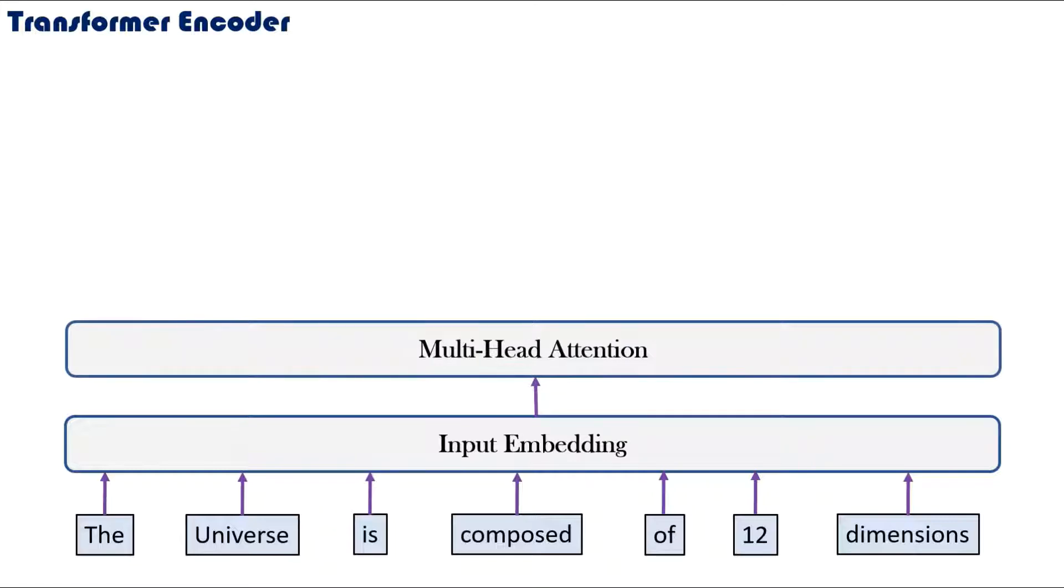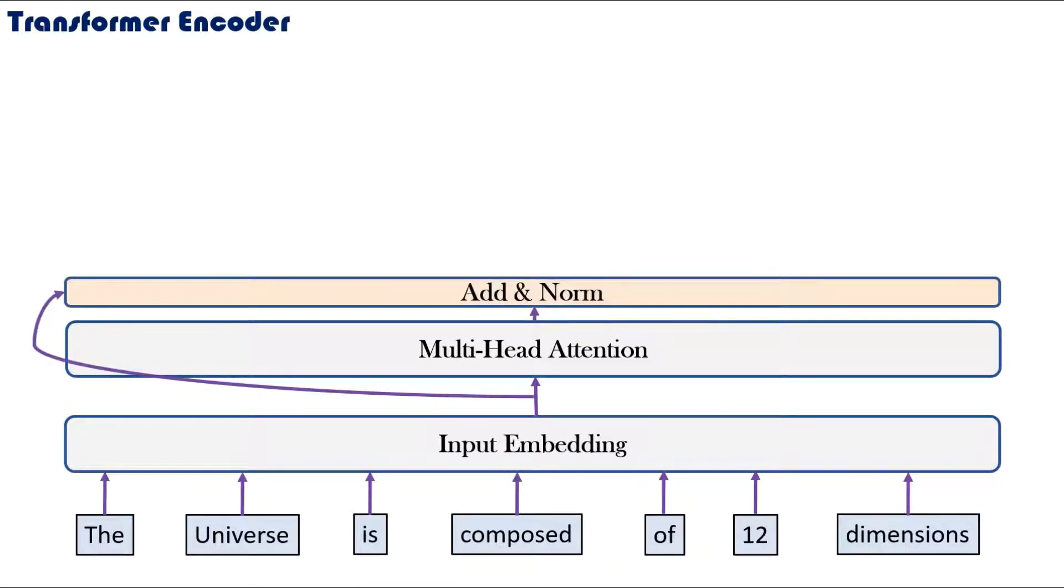These word embeddings are then passed to the multi-head attention mechanism. The add and norm layer takes the output from the multi-head attention and adds it onto the result from the input embedding layer. This is known as a residual connection.